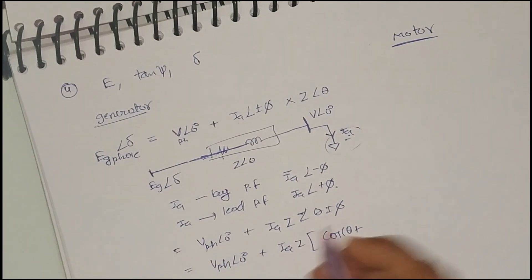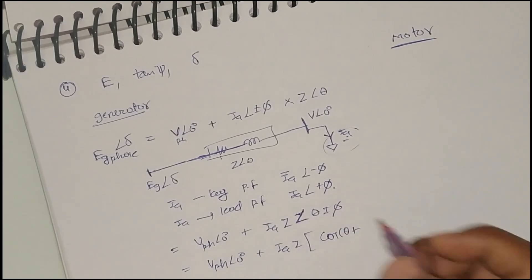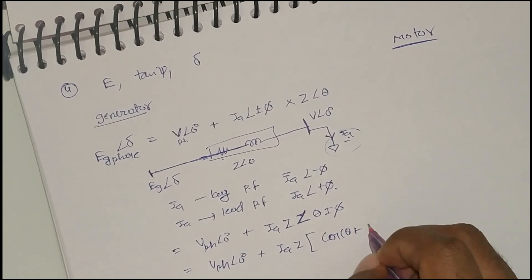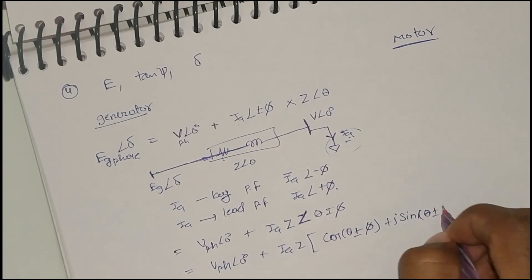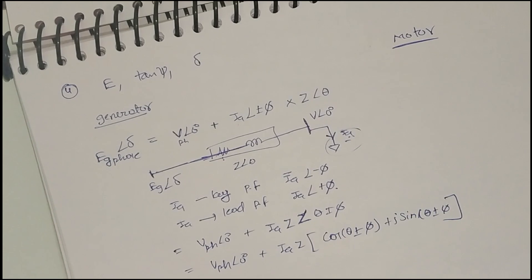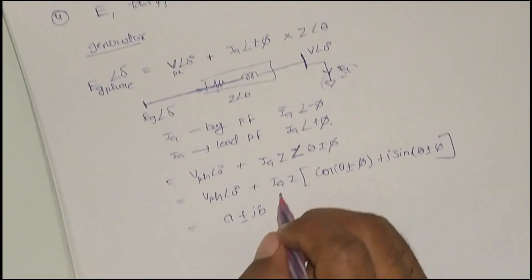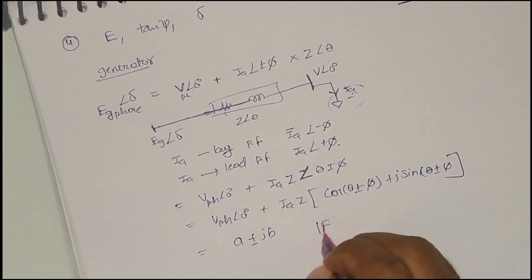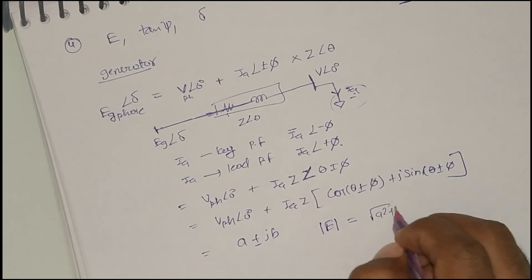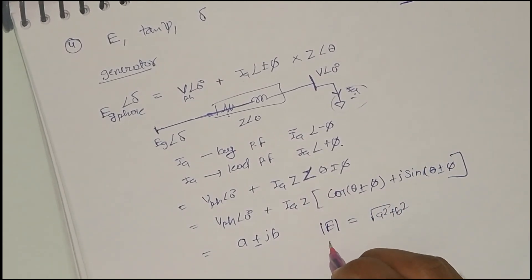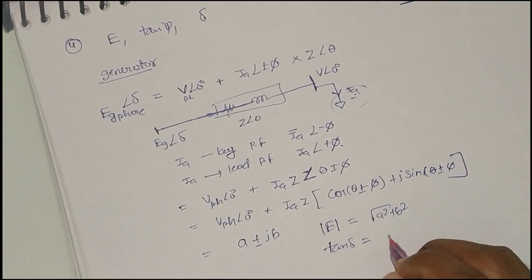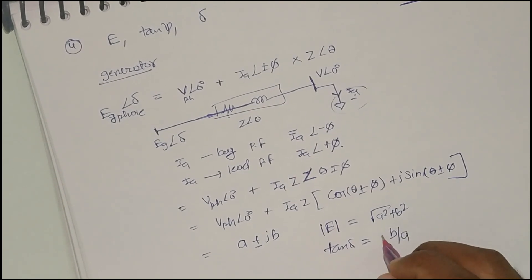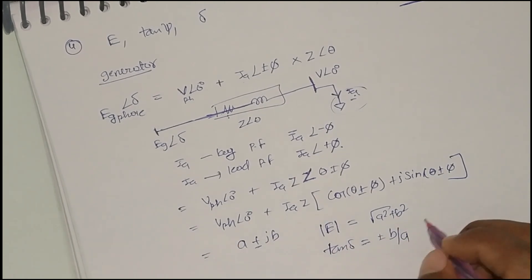In the exam you don't have a calculator to solve complex number problems, so convert into rectangular coordinates: cos(theta plus or minus phi) plus j sin(theta plus or minus phi). After simplification you will get a result like A plus or minus jB. To get the magnitude of E, take the square root of A squared plus B squared. For the angle, tan delta equals B over A.